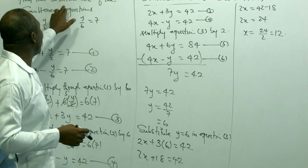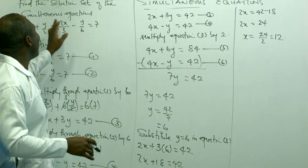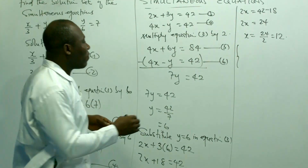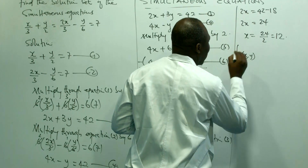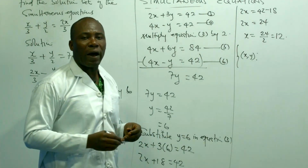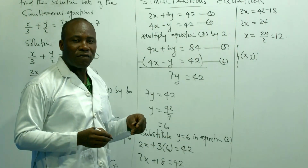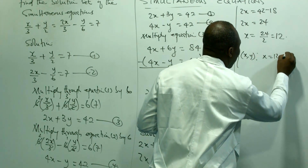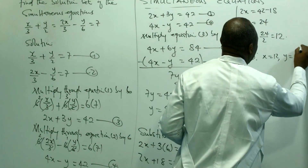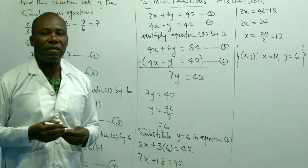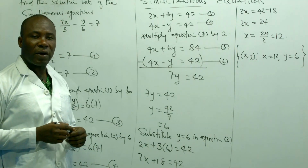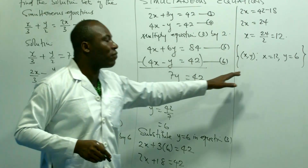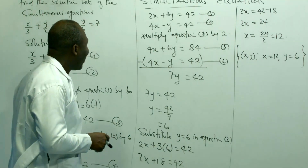The question asks to find the solution set, not just to solve. So we write the solution set with x and y in a bracket: (x, y) = (12, 6). That is our solution set. Anytime they ask you to write a solution set for simultaneous equations, that is how you write it.